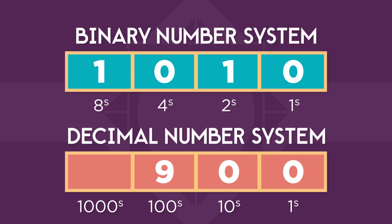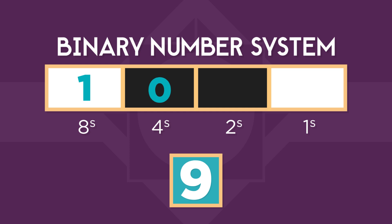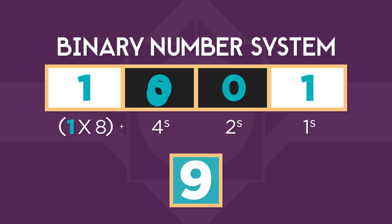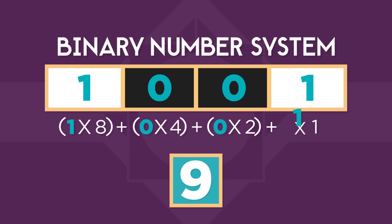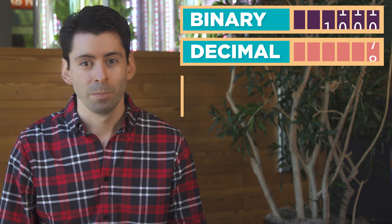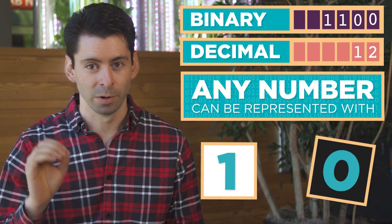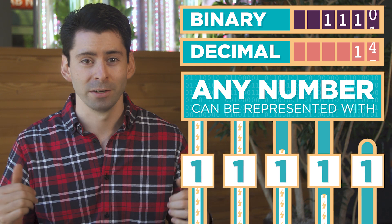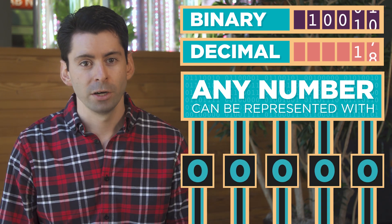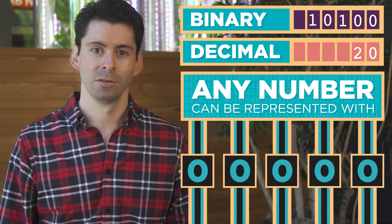For example, the number nine in binary is one, zero, zero, one. To calculate the value, we add one times eight, plus zero times four, plus zero times two, plus one times one. Almost nobody does this math because computers do it for us. What's important is that any number can be represented with only ones and zeros, or by a bunch of wires that are on or off. The more wires you use, the larger the numbers you can store.